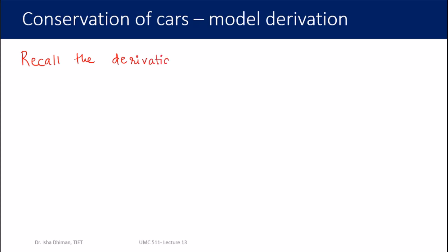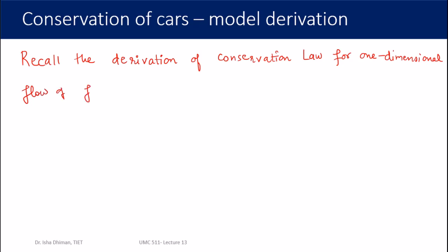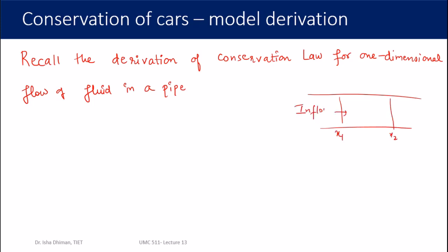Recall the derivation of the conservation law for one-dimensional fluid flow in a pipe. You have a pipe with two positions x1 and x2 — there is inflow at x1 and outflow at x2. The volume of fluid inside this section is determined by inflow and outflow: whatever goes in should come out, and whatever stays there at a particular time is the difference between the inflow and the outflow.